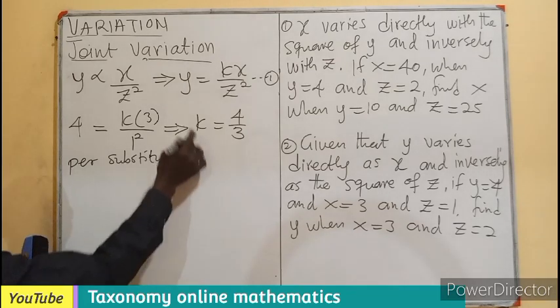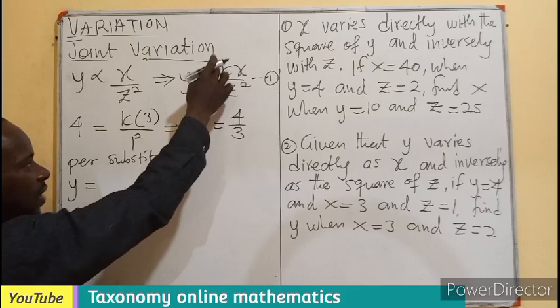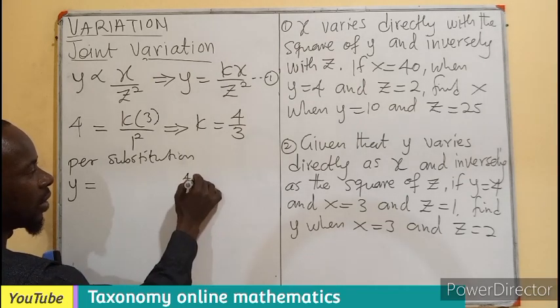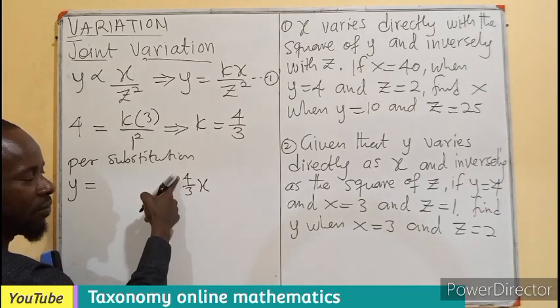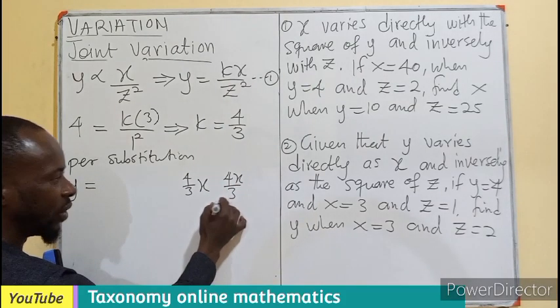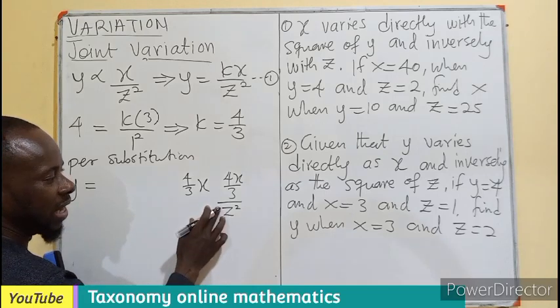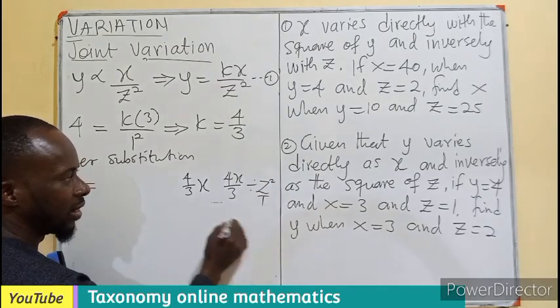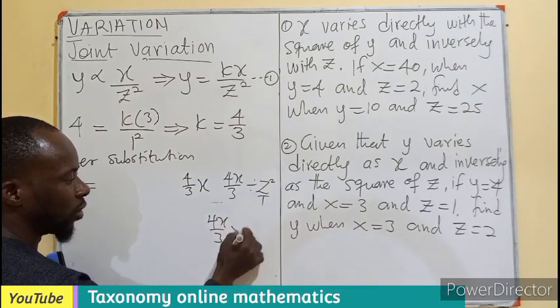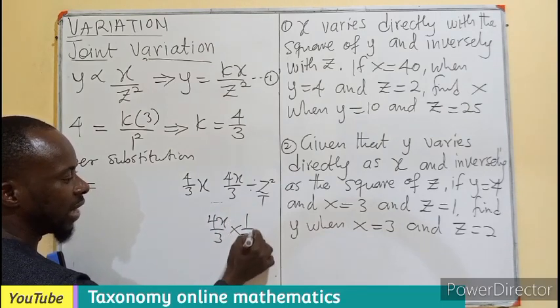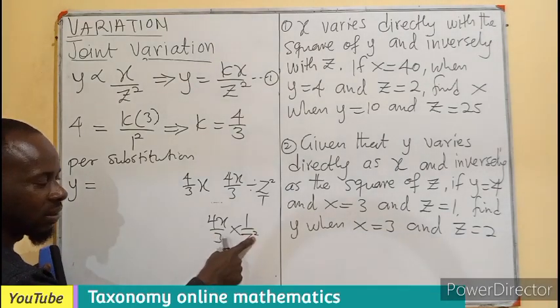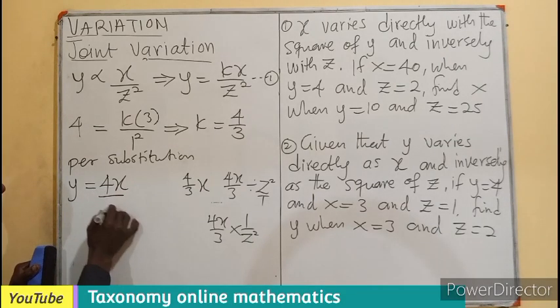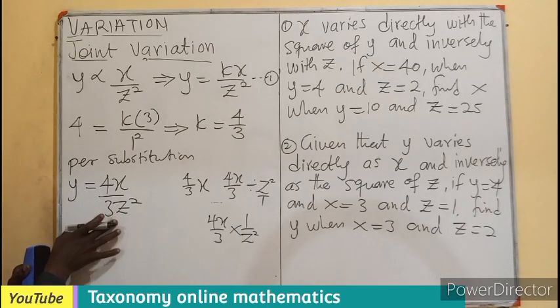Per substitution, we are going to have Y equals, if this is a fraction, we have 4 over 3 times X. Don't forget that X will multiply the 4, meaning 4X divided by 3, then we divide by Z squared. If the Z squared is changed to division, it becomes Z squared over 1 dividing 4X over 3. Change this to multiplication, the 1 goes up, Z squared comes down. So we'll be having 4X divided by 3Z squared per substitution.